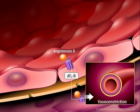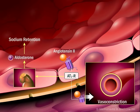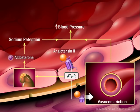In addition to a vasoconstriction effect, stimulation of the AT1 receptor causes the adrenal glands to release the hormone aldosterone, resulting in sodium retention. Combined with vasoconstriction, this increases blood pressure.